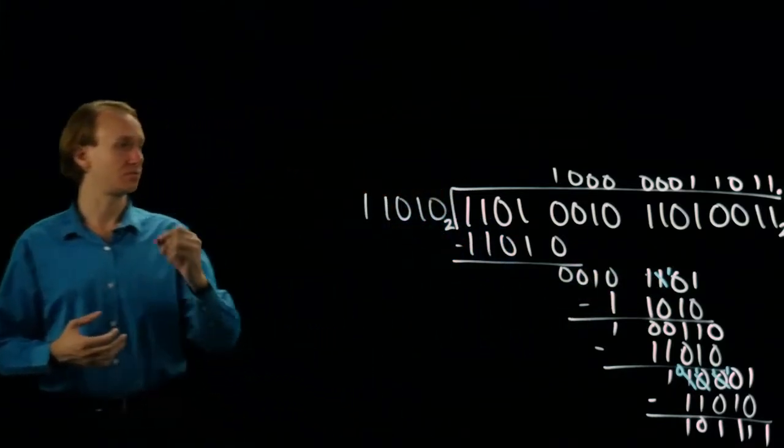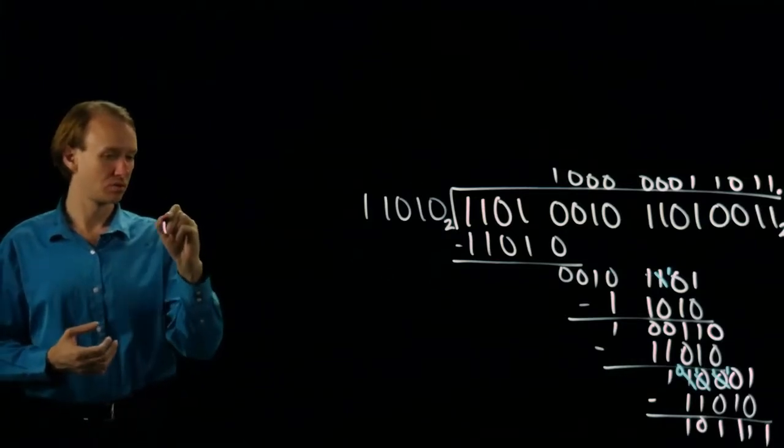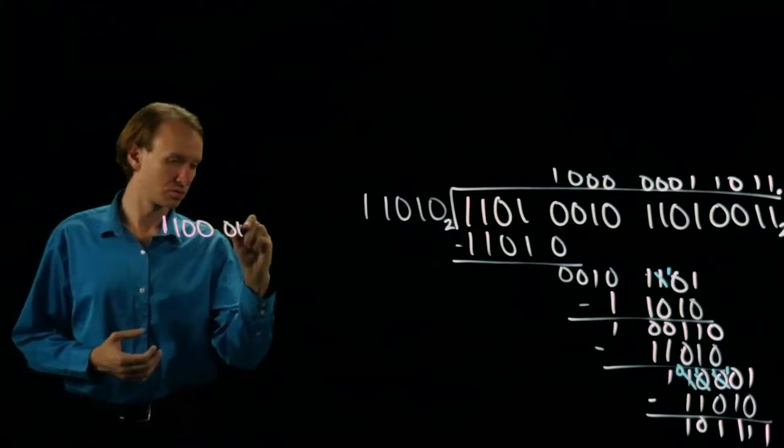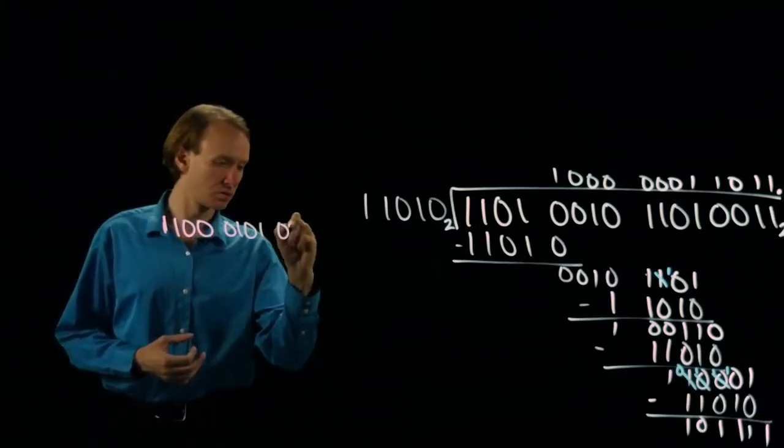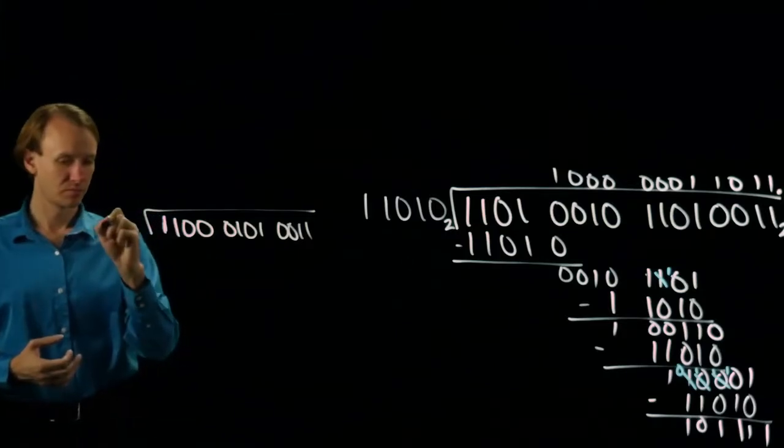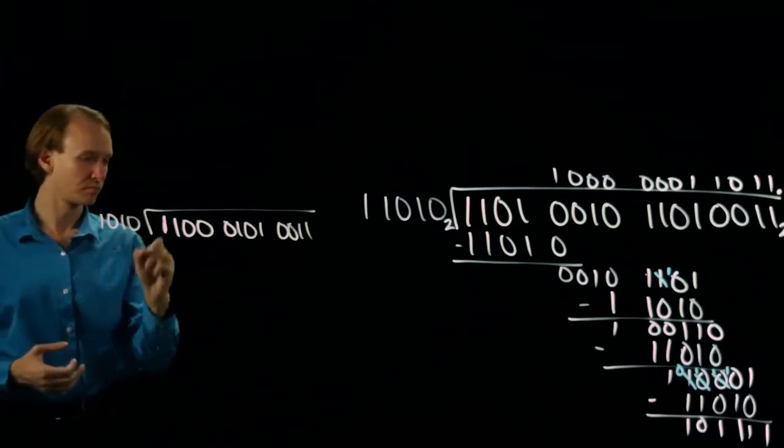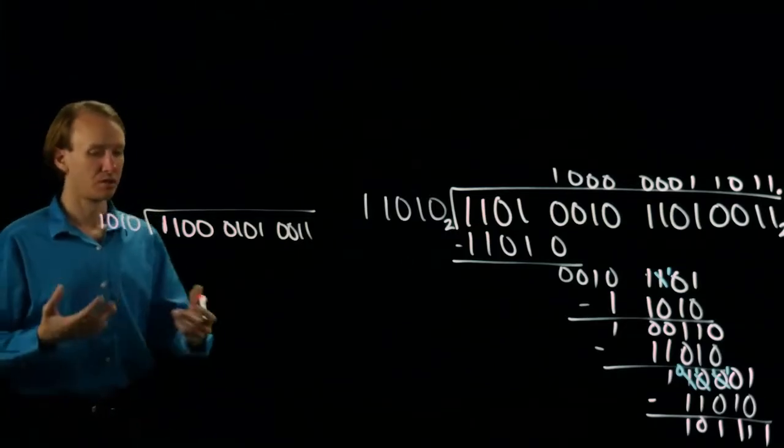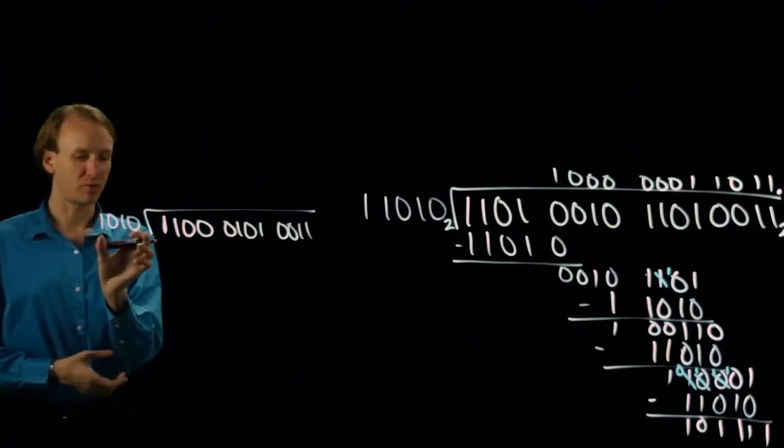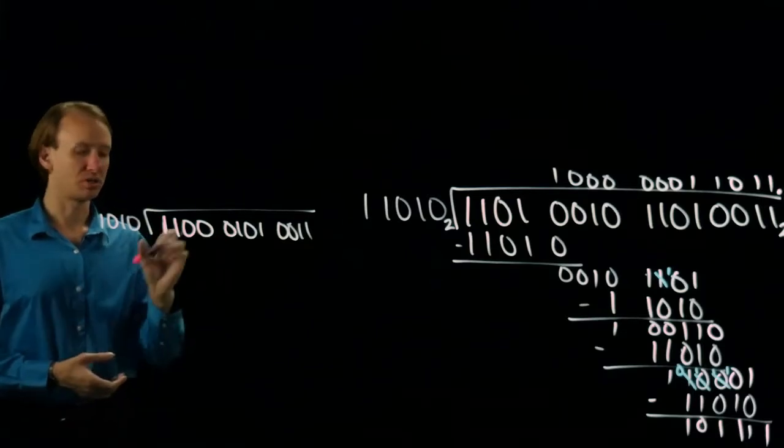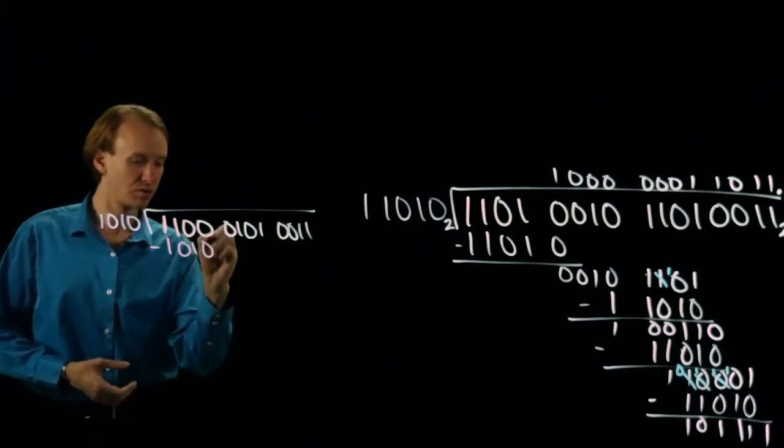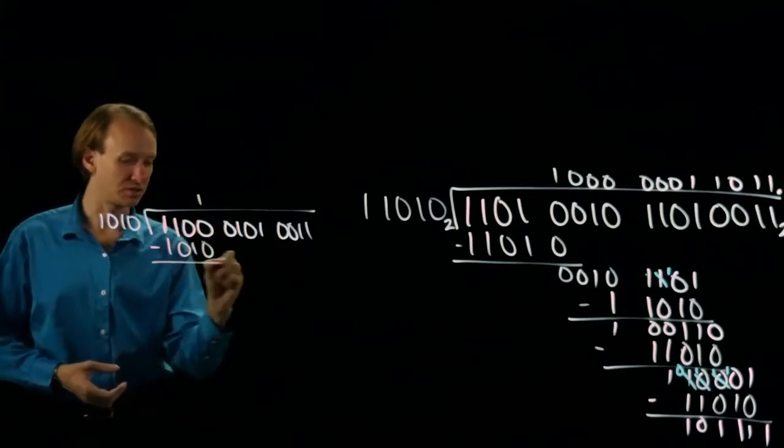I could try a slightly smaller example. There's another example that will probably not work out precisely. Here I've got a four-bit binary number that will go into this four-bit binary number. So I can do the subtraction starting at this point.